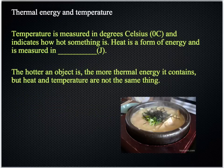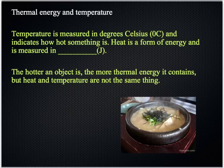We need to distinguish between the idea of thermal energy and temperature. Temperature is measured in degrees Celsius, and it can also be measured in degrees Kelvin. It indicates how hot something is. Whereas heat energy is a form of energy and it is measured in joules. The hotter an object is, the more thermal energy it contains, but heat and temperature are not the same thing. It's important to distinguish them — certainly between degrees Celsius or Kelvin and the unit for energy being the joule.